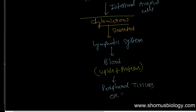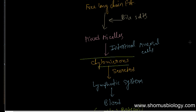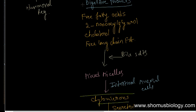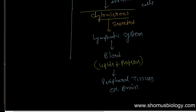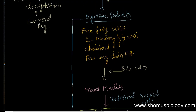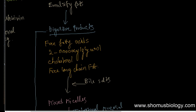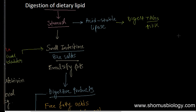The blood then brings these lipid components into the peripheral tissues — excluding the brain, because the brain relies on glucose for its energy requirements. While other nutrients can directly enter the bloodstream, lipids must take the route via the lymphatic system.